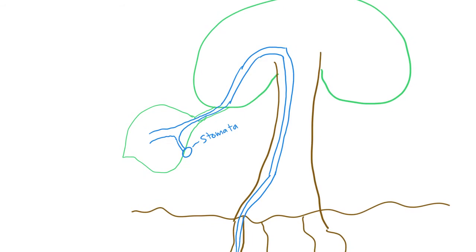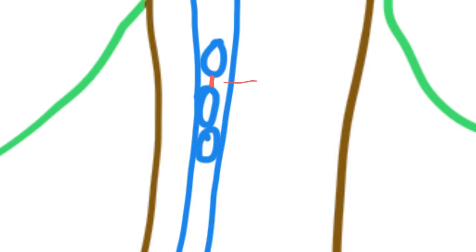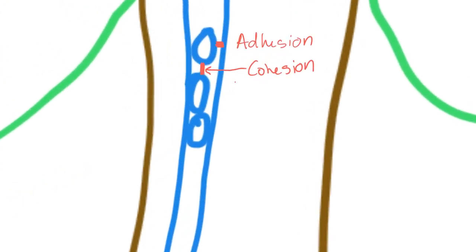There are a few different forces at play here. You have water molecules in here, and the water molecules form bonds between themselves — that's called cohesion. The water molecules also bind to the walls of the tracheids and vessels — that's called adhesion. Cohesion and adhesion then counteract gravity.